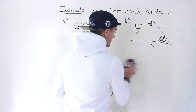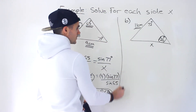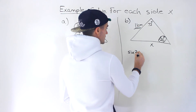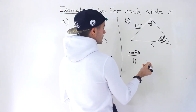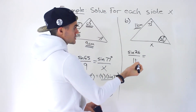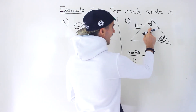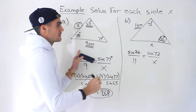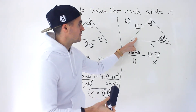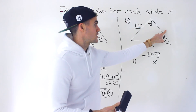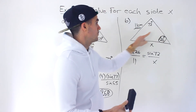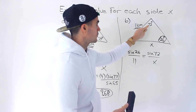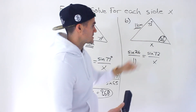Moving on to part B. Again, notice that we're given an angle and we're given the opposite side, so we know one of the ratios is going to be sine 26 over 11. We could set that up right away. In this particular case it's actually nicer because we're solving for side x and we already have the opposite angle. So this question is easier than part A because there's no preliminary work — we don't have to find the third angle because we're already given the opposite angle to x, which is 72 degrees.